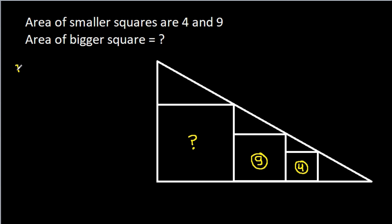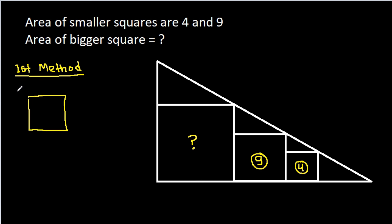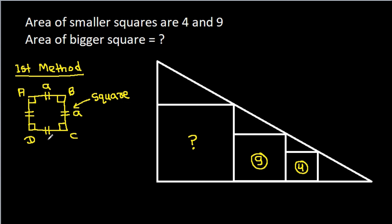For the first method, in any square ABCD, the area is A squared. The angles will be 90 degrees, and AB will be equal to BC, equal to CD, and equal to DA. Suppose the side is A, and the area of square ABCD will be A squared. Here, these angles will be 90 degrees.